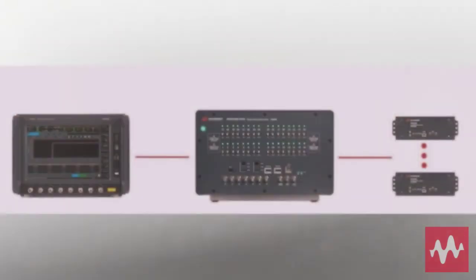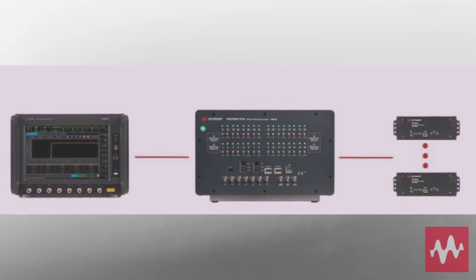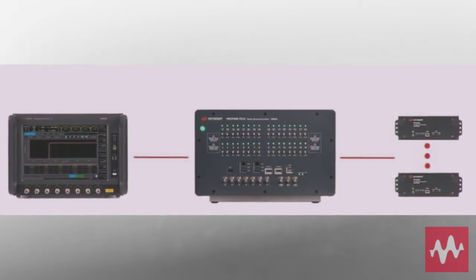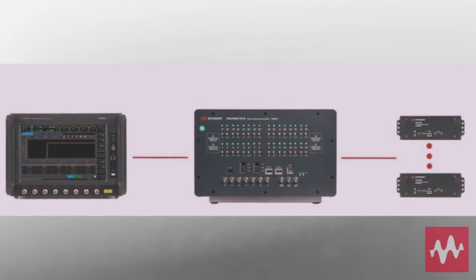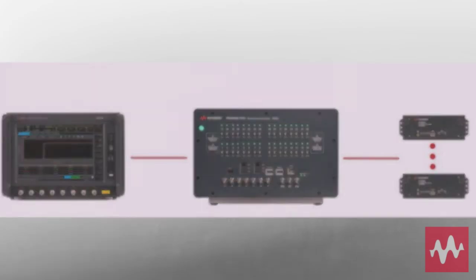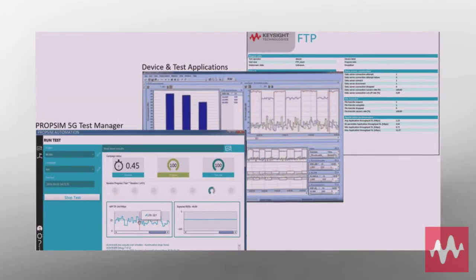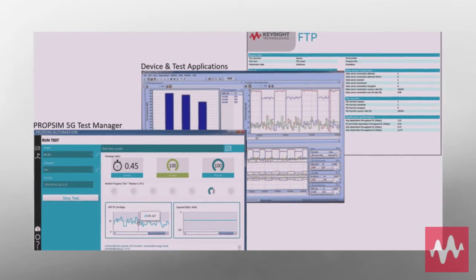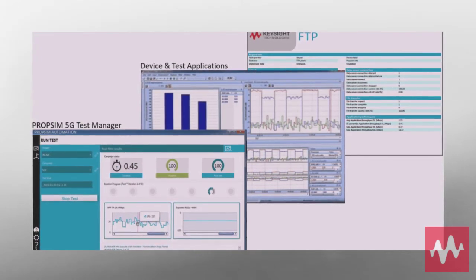Integration. PropSim FS16 offers seamless integration with Keysight's 5G network emulation solution. Keysight's over-the-air test solutions for devices and their sub-components are purpose-built to address a wide range of RF, demodulation, and functional performance test requirements across the development, acceptance, and manufacturing workflow for 5G NR design validation.